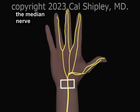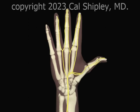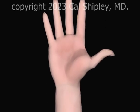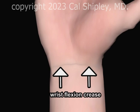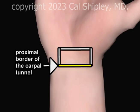In order to reach the hand, the median nerve must pass through the carpal tunnel, outlined in white here. The wrist flexion crease is a prominent skin crease which marks the border between the wrist and the hand. The wrist flexion crease overlies the proximal border of the carpal tunnel.